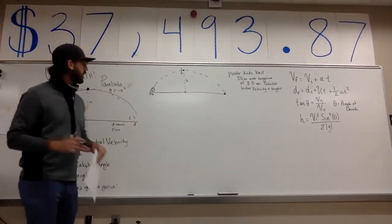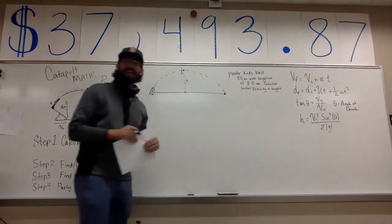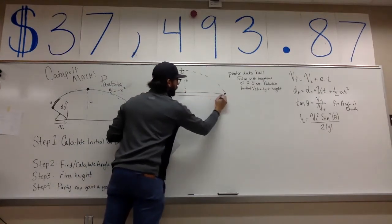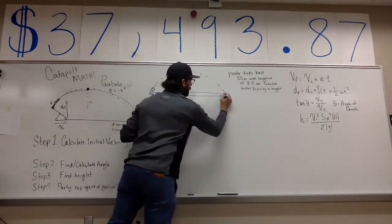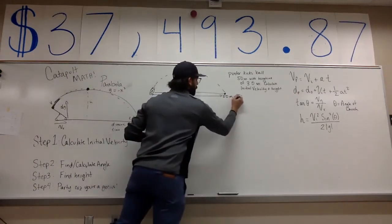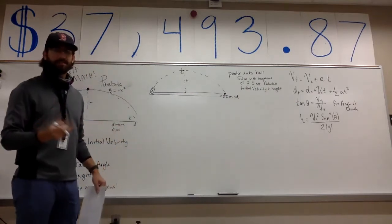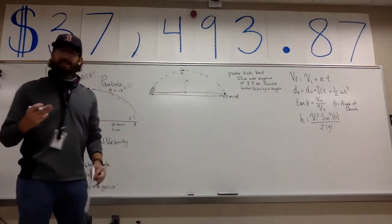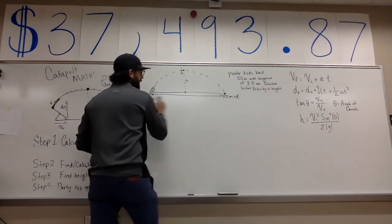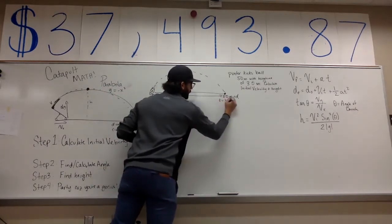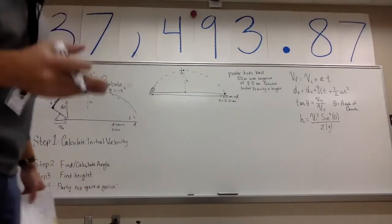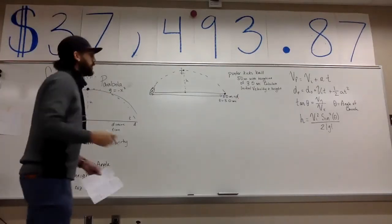Let's write down what we know. The punter kicked it 50 meters — so from start to finish, the distance is 50 meters. It had a hang time of three seconds, so the total time in the air is 3.0 seconds.